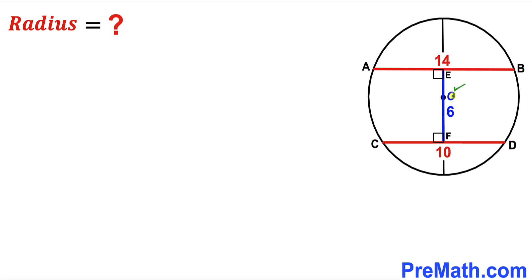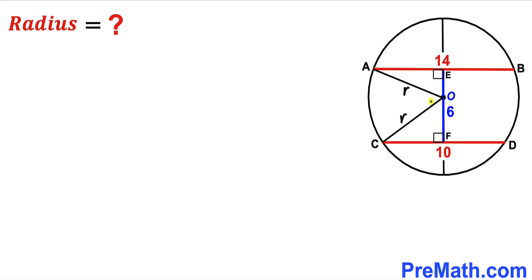Let me connect the center with points A and C. As you can see, I have connected points O and A, and O and C. We can see that OA is the radius of this circle — let me label this radius as lowercase r. Likewise, OC is the radius of this same circle, so let me label that R as well. We can also see that we have two right triangles: triangle AEO and triangle CFO.